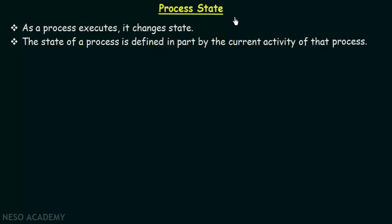Previously we have studied that a program in execution is known as a process. As a process executes it changes its state, and the state of a process is defined in part by the current activity of that process. So when a process is executing it can change from one state to another — the state of a process is defined by what it is currently doing.